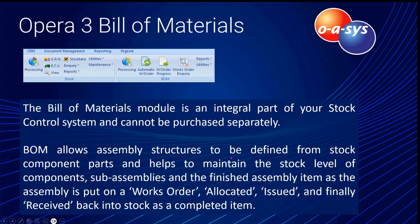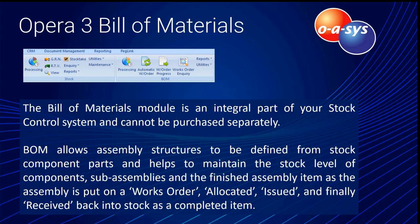The bill of materials is an integrated part of our stock control system and cannot be purchased separately. Bill of materials, or BOM, allows assembly structures to be defined from stock component parts and helps to maintain the stock levels of components, sub-assemblies, and the finished assembly item as the assembly is put on a works order — so it can be allocated, issued, and finally received back into stock as a completed item. In very simple terms, those items that we make or build ourselves — even if we only put a couple of bulbs for a vehicle together in a box making up a pack of bulbs — that could be a bill of material, because we take the box, we take the separate bulbs, and we add them together into a finished product.